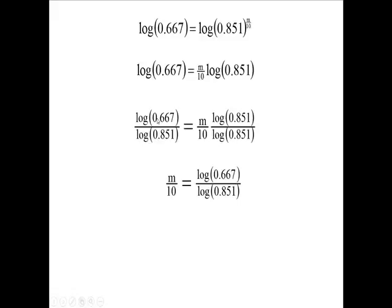M/10 equals log(0.667) over log(0.851). When you multiply by 10, you've solved for M. So M = 10[log(0.667)/log(0.851)]—this is your answer.